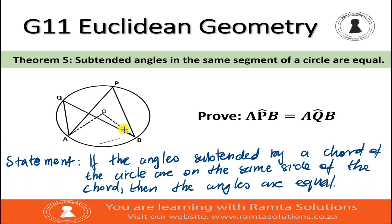This theorem says angle Q is equal to angle P, so we are now going to prove that indeed angle P is equal to angle Q. To help us do that, we can use the fact that arc AB also subtends an angle at the center, which is angle AOB.